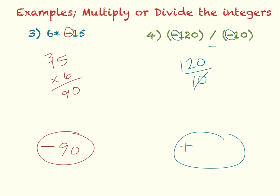Well, they both have a 0 on the end, so I knock that off. And that's going to equal 12 over 1, which simplifies to 12. So my final answer is positive 12.